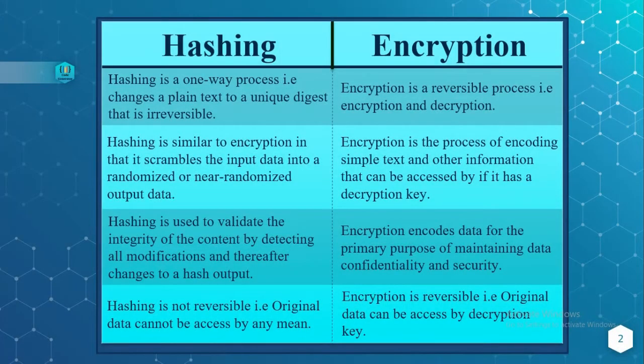The first difference is that hashing is a one-way process — converting plain text to a unique digest is irreversible, so you cannot reverse the process. Whereas encryption is a reversible process — encryption and decryption of plain text to ciphertext can be done. Hashing also scrambles input data into randomized or near-randomized output data.